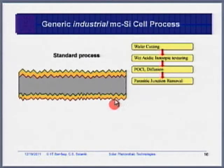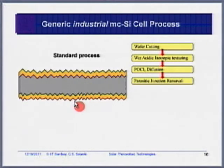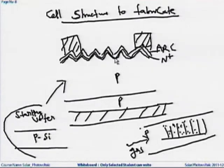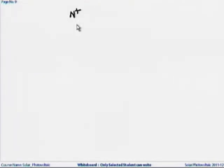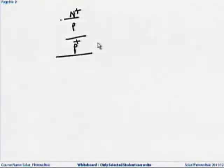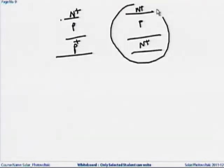After edge cutting, the back-side junction remains a problem. The current structure is: top layer N-plus, middle P, back side N-plus again. But the desired structure is N-plus on top, then P, then P-plus at the back. So we have to go from the current structure to the desired one.